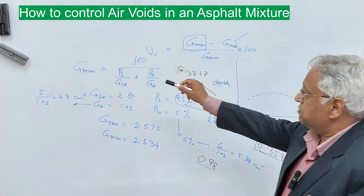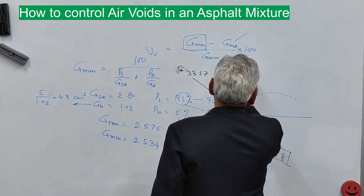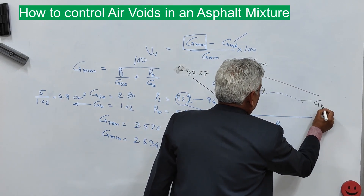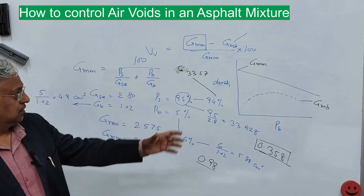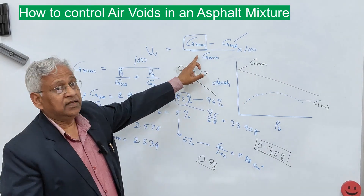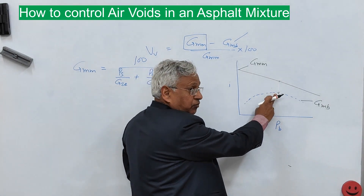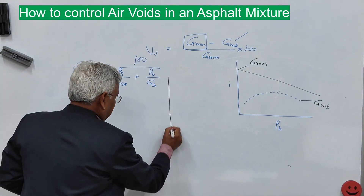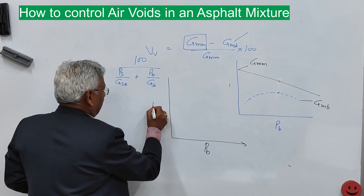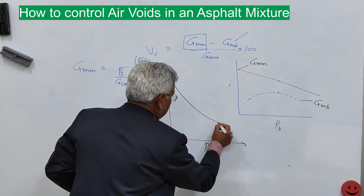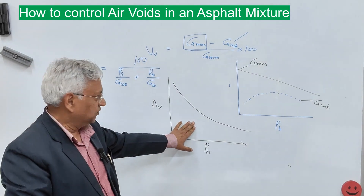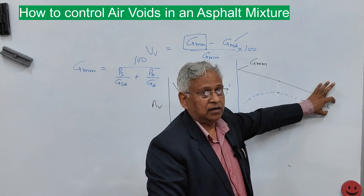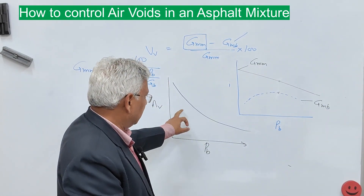Therefore, Gmm is very sensitive to binder content. When plotted, Gmm decreases while Gmb increases with increasing binder content — initially the gap (air voids) is large. As binder content increases, air voids reduce with a steep slope and then stabilize, becoming almost horizontal after the optimum binder content, where the two lines become nearly parallel.